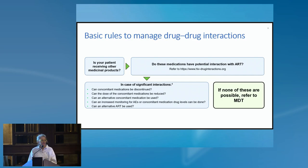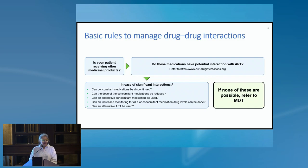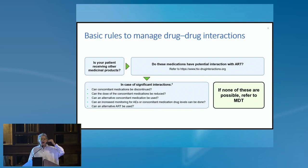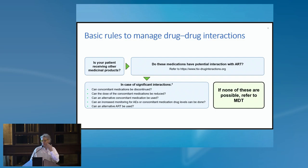It's important to have basic rules to manage drug-drug interactions. First, is my patient on other medicinal products? Do these medications have potential interactions with antiretrovirals? If yes, check the Liverpool website. In case of significant interactions, can the concomitant medication be discontinued? A typical example is St. John's Wort — an over-the-counter herbal antidepressant that is an inducer of CYP450 3A4 and glucuronidation, very strongly contraindicated with any antiretroviral. So if someone is on that, you tell them to stop.